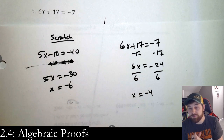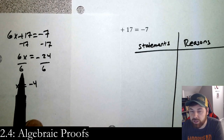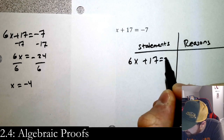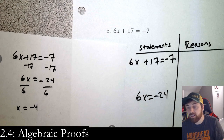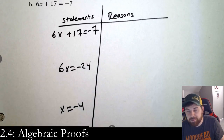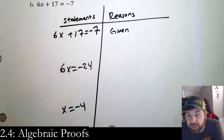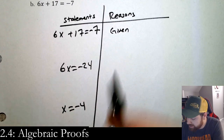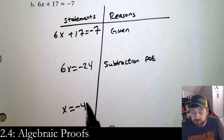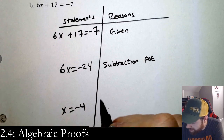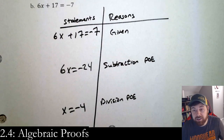Solve it on scratch paper: subtract 17 from both sides to get 6x = −24, then divide by 6 to get x = −4. Now copy those steps into the statements column — no in-between scratch work shown. First statement is the given equation, next is 6x = −24, then x = −4. You always start with the given. From the first to second step we subtracted 17 on both sides — that's the subtraction property of equality.